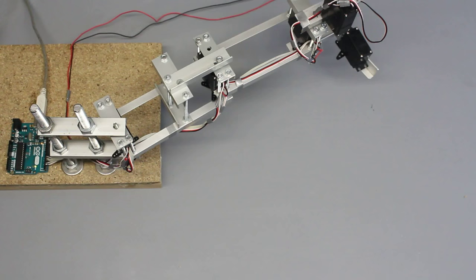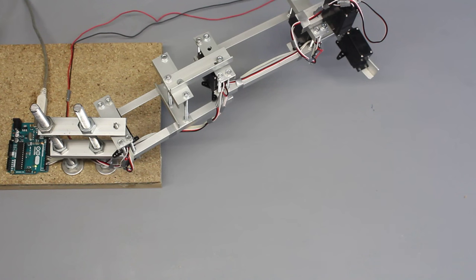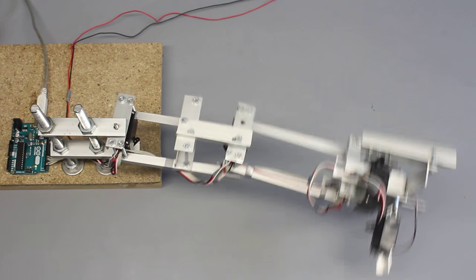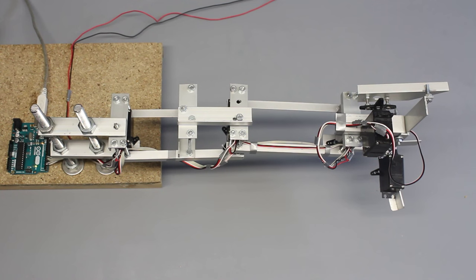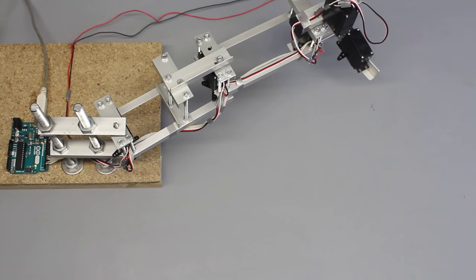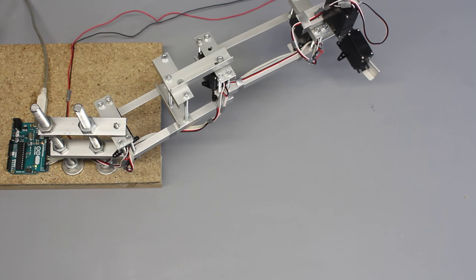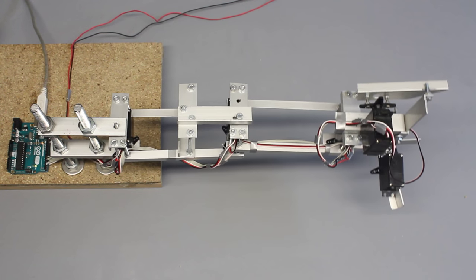There is another physical quantity that worsens the accuracy of a robotic arm: inertia. There are noticeable oscillations, especially when turning the arm around the first pivot point. The slower the movement, the fewer oscillations.